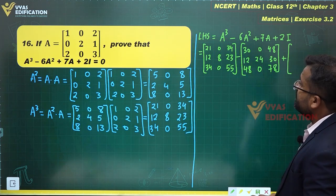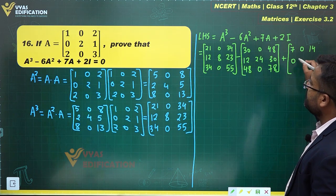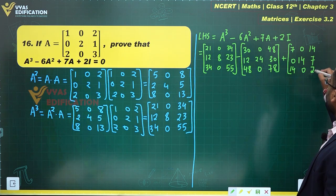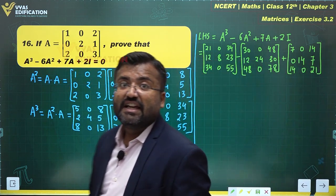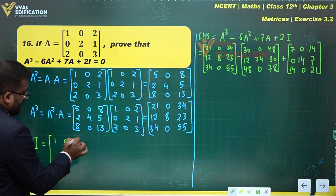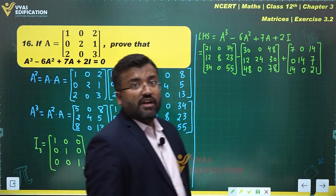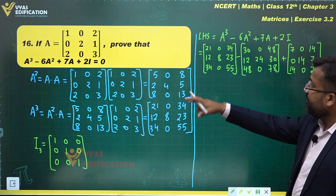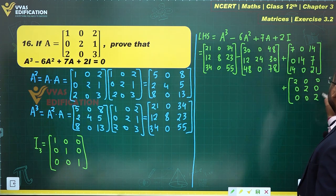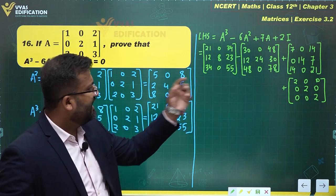For 7A, we multiply 7 into matrix A: 7×1=7, 7×0=0, 7×2=14, 7×0=0, 7×2=14, 7×1=7, 7×2=14, 7×0=0, 7×3=21. The identity matrix I of third order is [1 0 0 / 0 1 0 / 0 0 1], and 2I = [2 0 0 / 0 2 0 / 0 0 2].